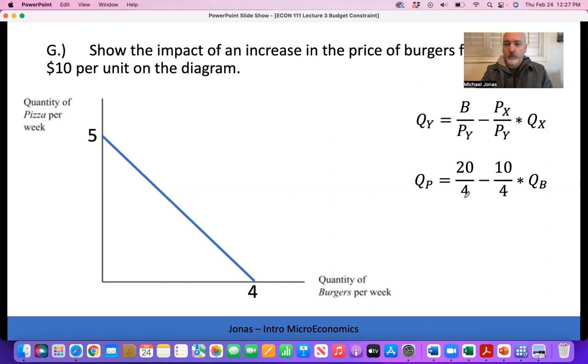It's still 20 over 4, so the Y-intercept is still the same, but the rate of trade-off has essentially doubled. That numerator term has gone from 5 up to 10. So we now have 5 minus 2.5 times the quantity of burgers. When we think about that slope doubling, it's twice as steep as it used to be.